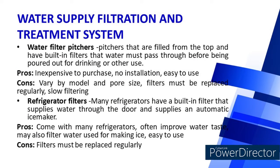Water Supply Filtration and Treatment Systems: Water filter pitchers are filled from the top and have built-in filters that water must pass through before being poured out. Pros: inexpensive to purchase, no installation required, and easy to use. Cons: vary by model and pore size, filters must be replaced regularly, and filtering is slow. Refrigerator filters are built-in filters that supply water through the door and supply an automatic ice maker. Pros: come with many refrigerators, often improve water taste, may filter water for ice, and easy to use. Cons: filters must be replaced regularly.